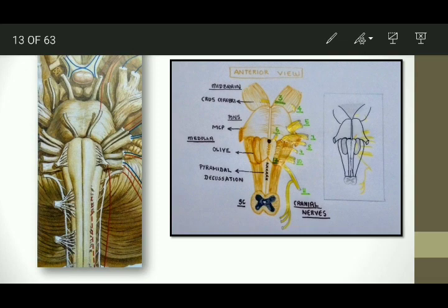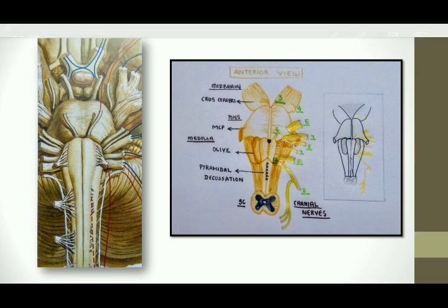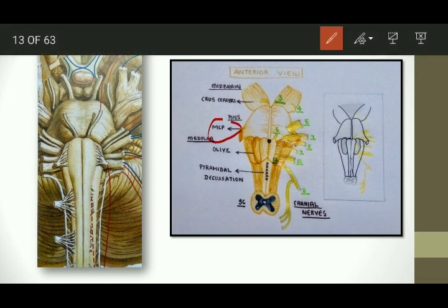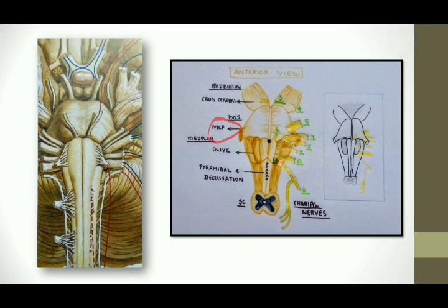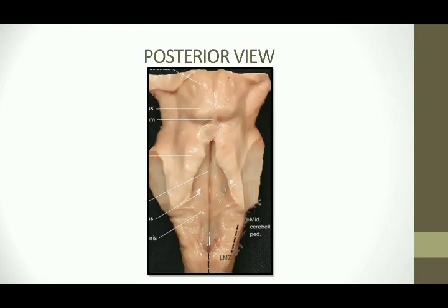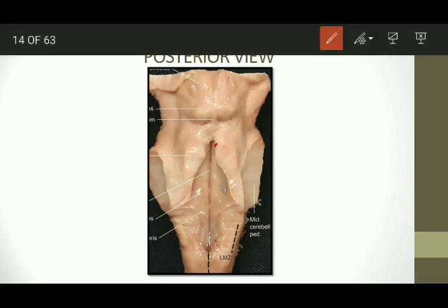This hand-drawn diagram shows the middle cerebellar peduncle, which connects the pons with the cerebellum. Coming to the posterior view — this is the view after removing the cerebellum. We can see the fourth ventricle here. This is the fossa for the fourth ventricle on the dorsal aspect of the pons, along with the middle cerebellar peduncles and the superior and inferior colliculi of the midbrain.